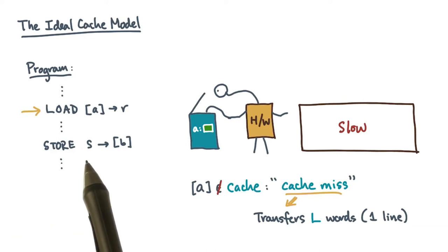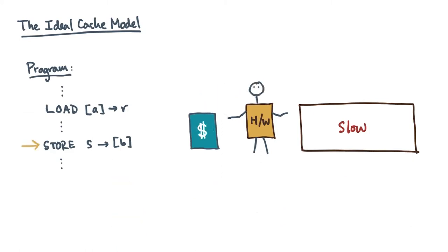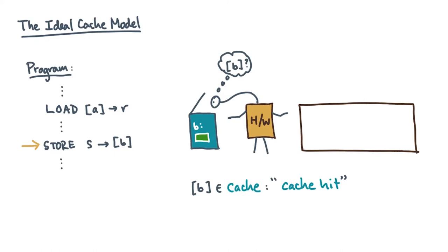So what about a store from, say, a register S to a memory address B? It will behave kind of like a load operation. If there's a copy of B in cache, then it's a cache hit, and we update the cached value.